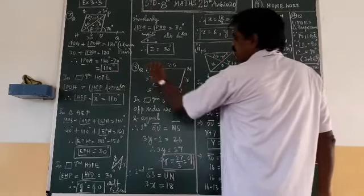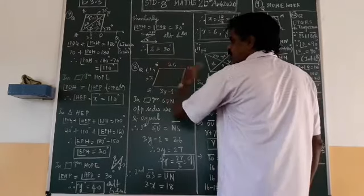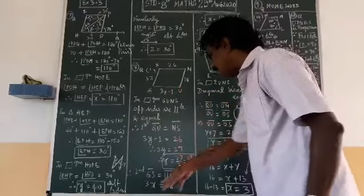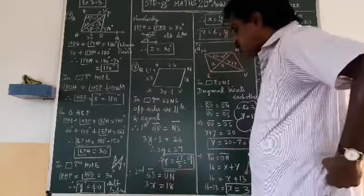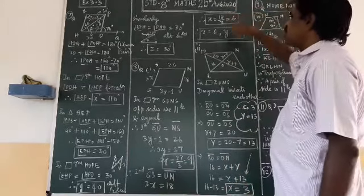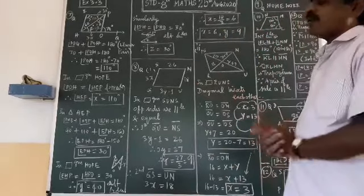And once again you see, here GS and UN are equal. Because parallelogram, opposite sides are equal. So 3X equal to 18 directly. GS equal to UN, 3X equal to 18. So X equal to 18 divided by 3, X is 6. Y is 9. That is the eighth question, first problem.